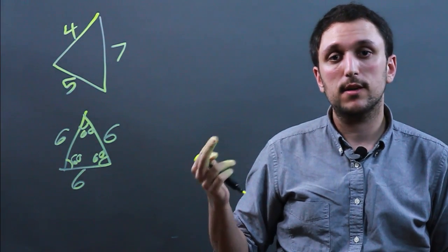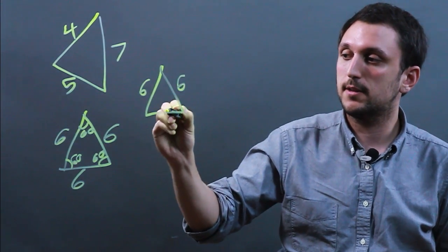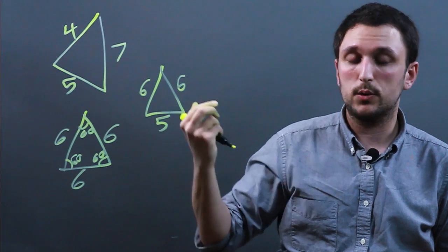In between the two is an isosceles triangle, in which, say, this is six, this is six, and this is five. In an isosceles triangle, two sides are equal, and two angles are equal.